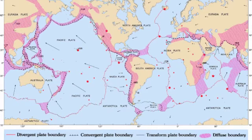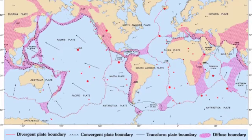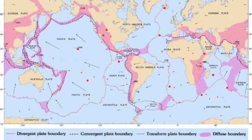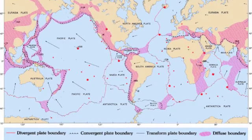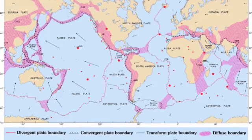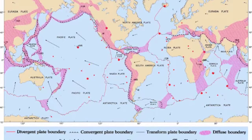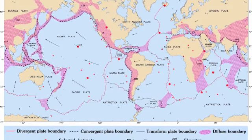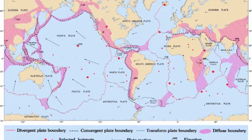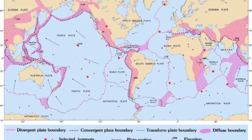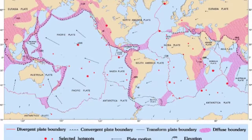Wegener theorized that tidal and centrifugal forces pushed the continents through the Earth's crust. At the time, he didn't know about the theory of plate tectonics. Since his ideas challenged what geologists had learned in the past 70 years, geologists dismissed it quite quickly. Geologists such as Barry Wilson were satisfied when the theory's overall discussion was stopped.